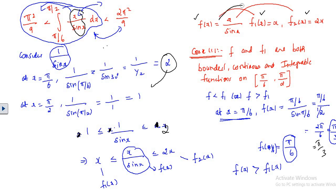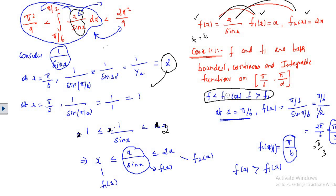In Case 1, I compare f and f1. Both are bounded, continuous, and integrable functions on the interval [π/6, π/2], because f1 is a polynomial function, hence continuous and bounded on this closed interval. Now I need to check whether f is greater than or less than f1. I'll take an arbitrary point in the interval, x = π/6, and find the values of f and f1 at that point.